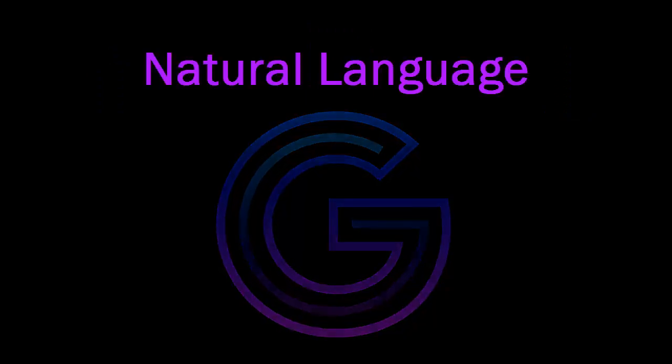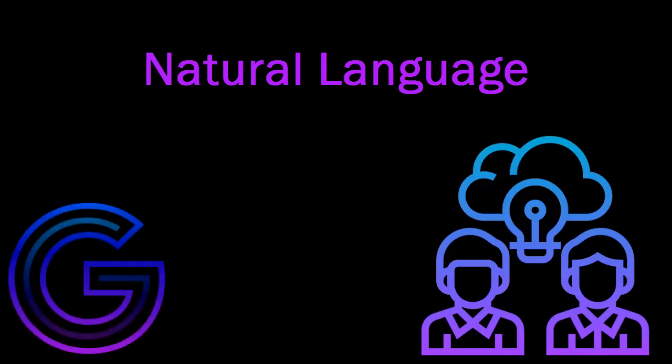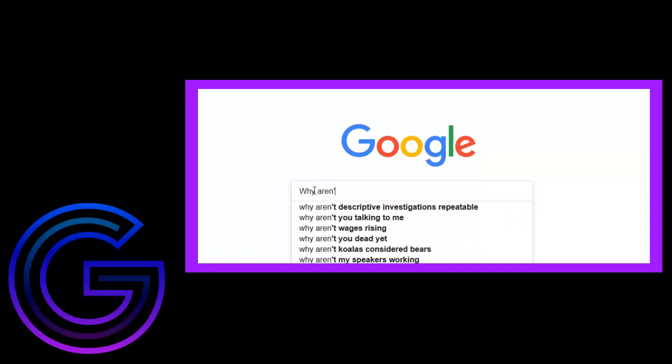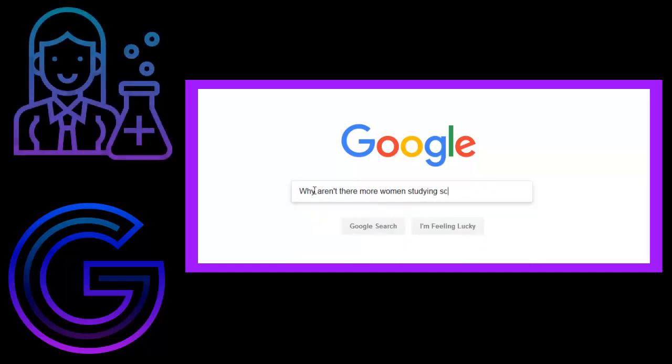Google is easy to use because we can talk to it using something called natural language. Natural language is the way we talk to our friends and family, the way we post to social media, and the way you're probably used to finding information. When you use a search engine like Google, you can put in a whole sentence just like you would say out loud to a friend — for example, 'Why aren't there more women studying science?'